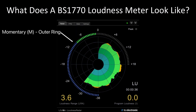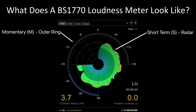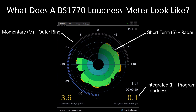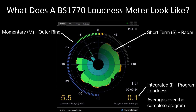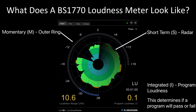Momentary, or M for short, averages the loudness over the last 400 milliseconds, or just under half a second. The short-term, or S for short, averages over the last three seconds. The last of these three is integrated, which is an average over the complete program so far. And then at the end of the program, it is this that is one of two measurements that will define whether a program will pass or fail.